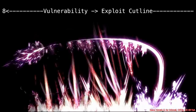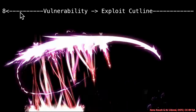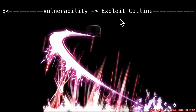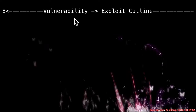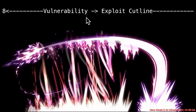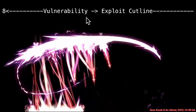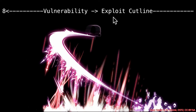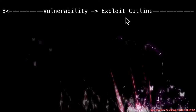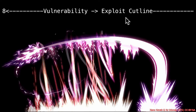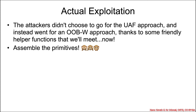We find ourselves at the vulnerability-to-exploit cut line. We're no longer discussing the nature of the vulnerability — we already covered how the type confusion works. Now we're discussing how this type confusion was exploited in the wild by real attackers. They didn't choose the use-after-free approach; instead, they tried an out-of-bounds write approach.